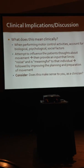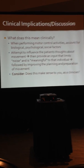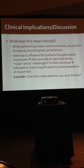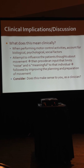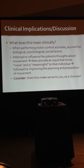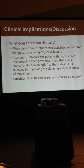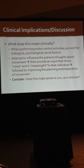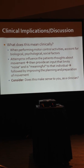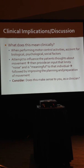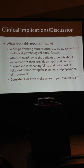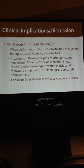So what does this mean to us clinically? When we perform motor control activities, we're not telling you how to do it — we're just saying, think about these three variables, because we do know that they're influential. Attempt to influence the patient's thoughts about movement. Provide some form of input. Look at whether there's a cortical representation issue — there's a lot of good research coming out of Australia about this. And then consider movement. Does this algorithm make sense to you as a clinician? Thanks.